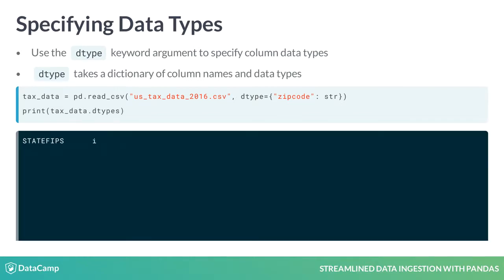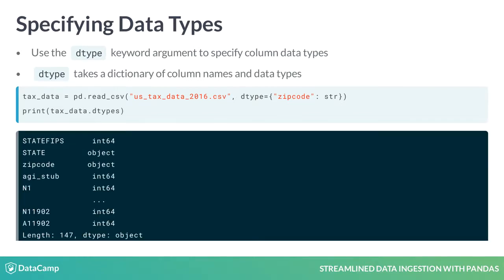Printing the new dataframe's dtypes, we see that zip code's dtype is Object, which is the Pandas counterpart to Python strings.